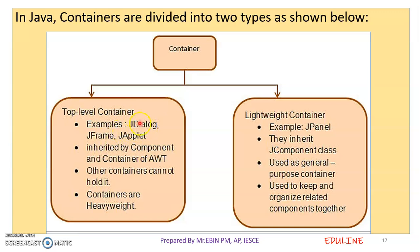Top-level containers are heavyweight containers in Swing. The next type is the Lightweight Container, for example JPanel. Lightweight containers inherit from JComponent classes. They are used as a general-purpose container to keep and organize related components, grouping all related items together.